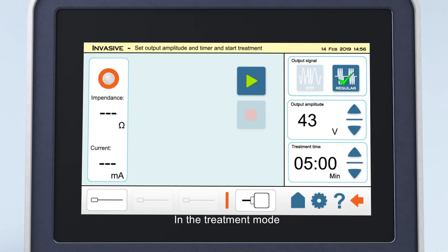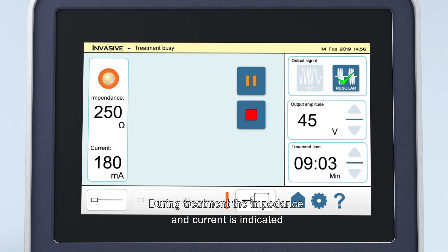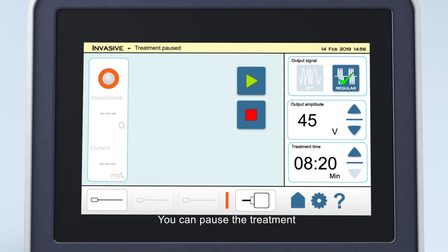In the treatment mode, you can choose between the output amplitude and treatment time. During treatment, the impedance and current is indicated. You can pause the treatment, after which the treatment can be continued.